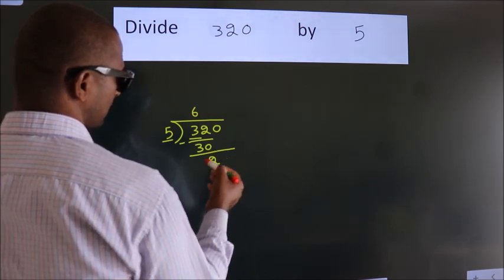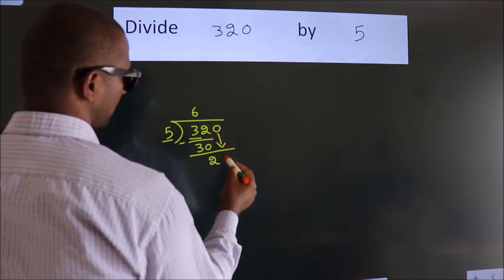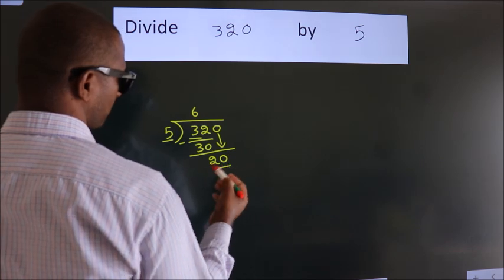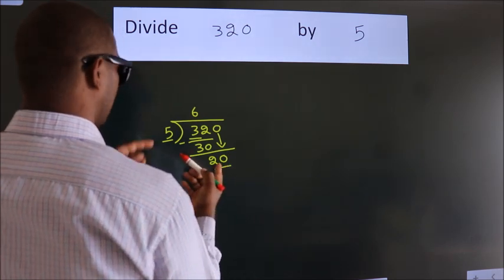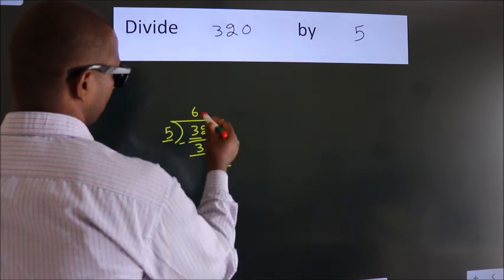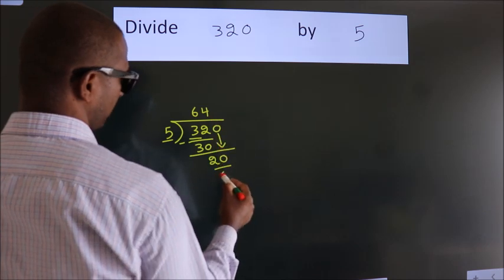After this, bring down the beside number. So, 0 down. So, 20. When do we get 20? In 5 table. 5 times 4 is 20.